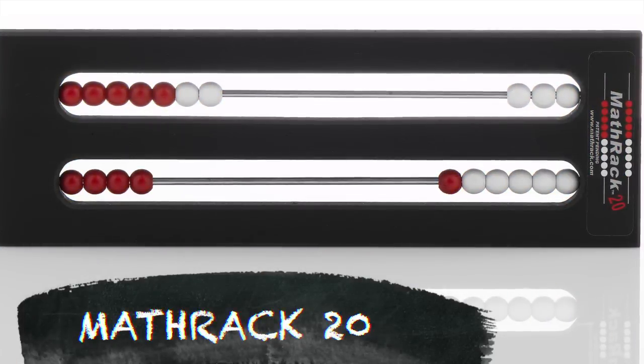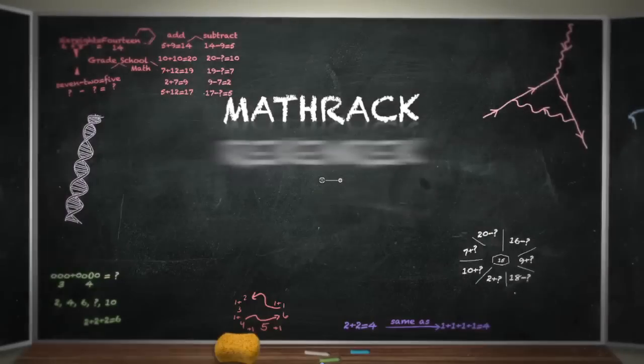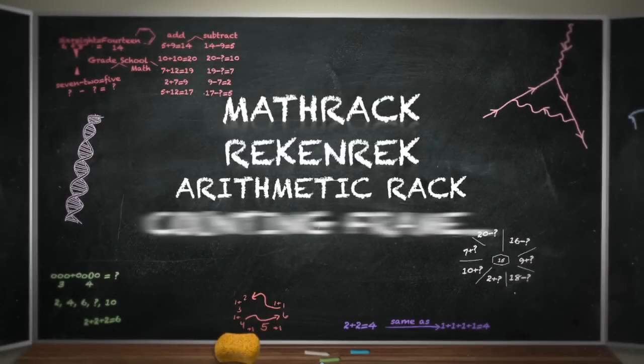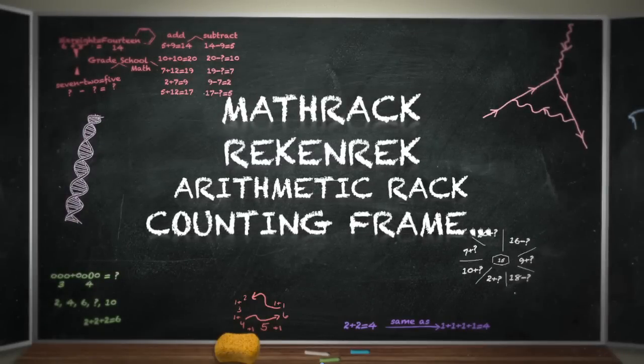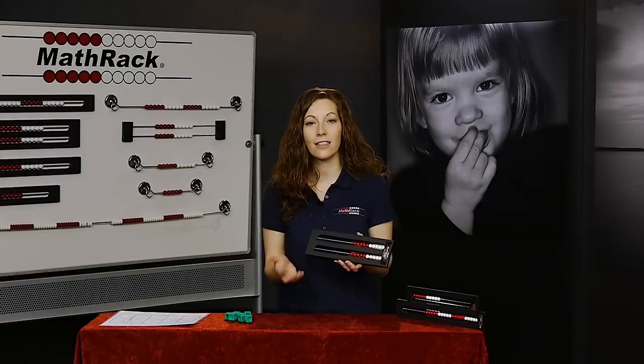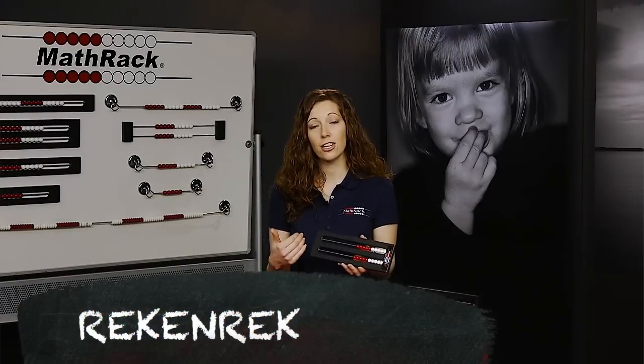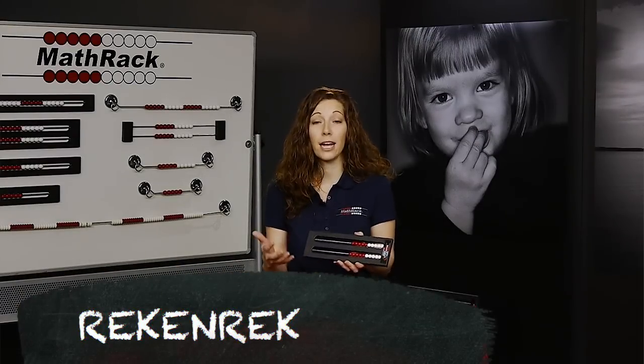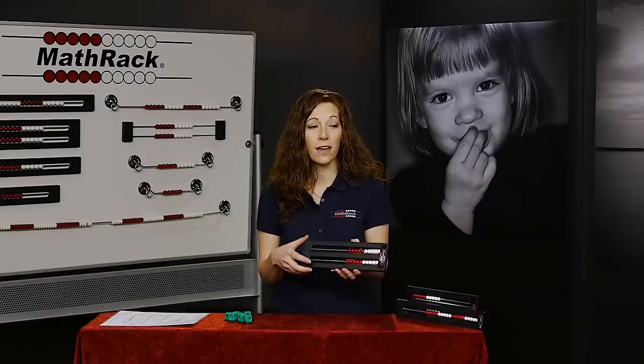It's called a Math Rack 20. It's also known as a Reckon Rack, an arithmetic rack, a counting frame. It's got lots of variations. It was originally designed in the Netherlands and was called a Reckon Rack, and the translation over to the United States has created lots of different variations of that name.